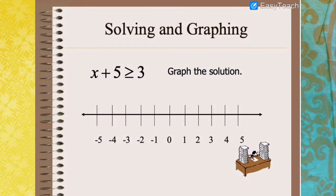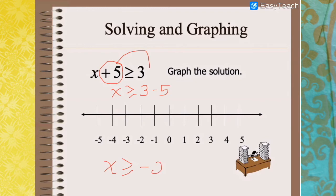To graph the solution of an inequality, for example x plus 5 greater than or equal to 3: first solve — transfer 5 to the other side, so x greater than or equal to 3 minus 5, therefore x is greater than or equal to negative 2. Next, graph the solution: locate negative 2, check the inequality sign — since it has an equal sign, use a solid dot. Since x should be greater than or equal to negative 2, the arrow goes towards the right.